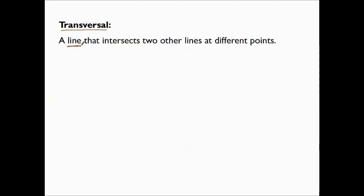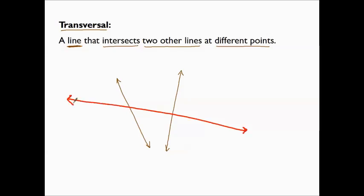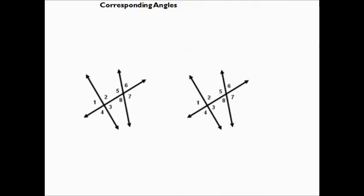Transversal. This is a line that intersects two other lines at different points. Here I'm going to draw two lines — and I'm not necessarily going to make them parallel because they don't have to be — and now I'm going to draw the transversal. It is a line that intersects two other lines at different points. From drawing a transversal, we've created a variety of angles, and now it's time to discuss the different types of angles created by a transversal.